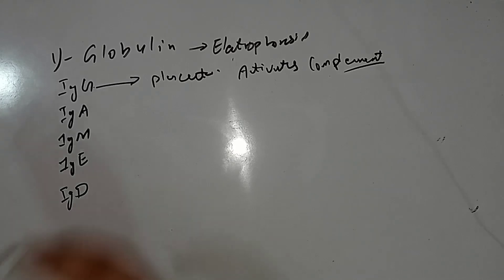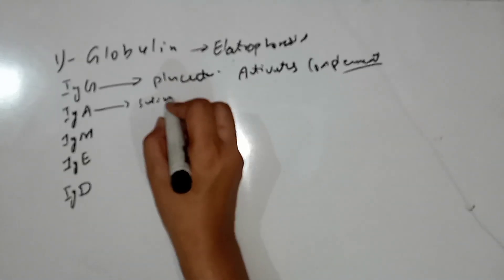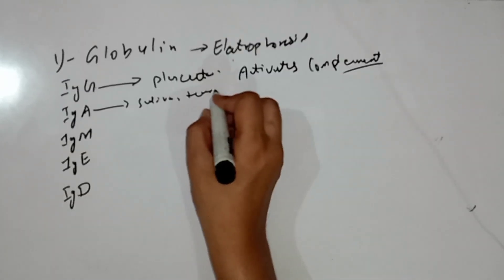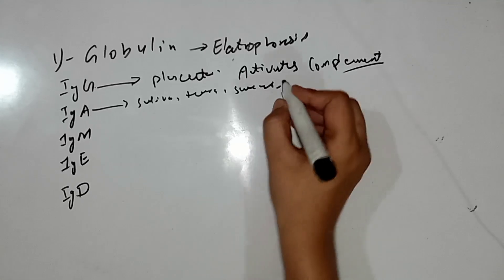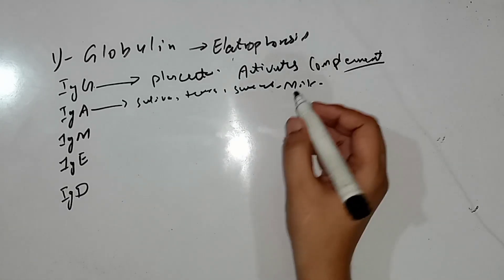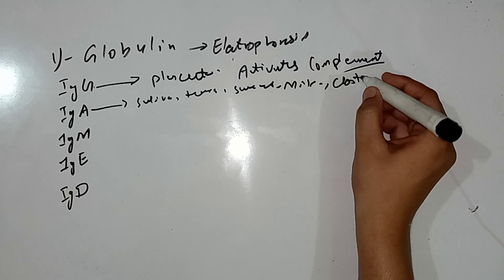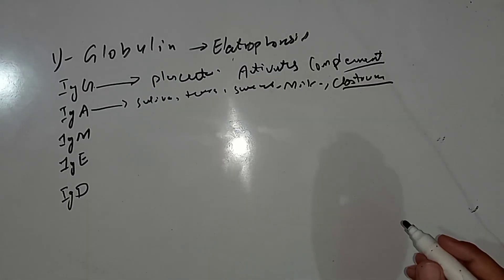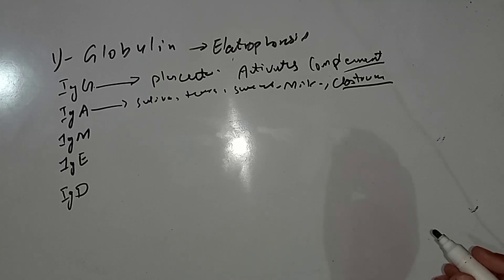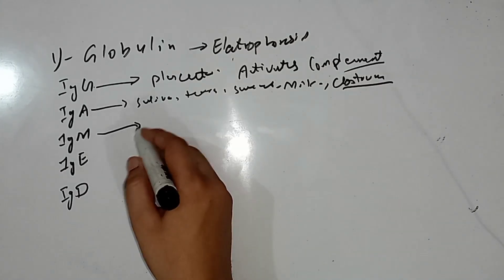IgA is present in body secretions such as saliva, tears, sweat, milk, and the wall of the intestine. It is also present in colostrum, which is the first milk produced after delivery of the fetus. IgA is involved in the destruction of foreign substances in the body.